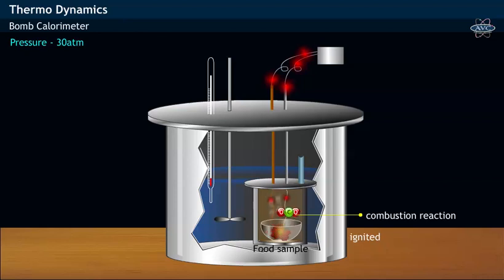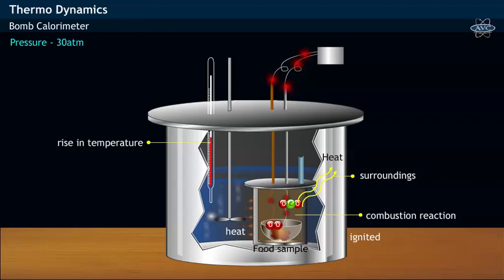It undergoes combustion reaction and thereby forms carbon dioxide gas associated with the release of huge amounts of heat energy. This heat energy, shown as arrows, flows out to the walls of the bomb and heats up the water surrounding the bomb. The heated water causes a rise in temperature in the insulation chamber, which ensures that no heat of the reaction escapes out.